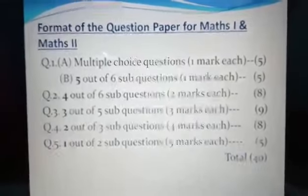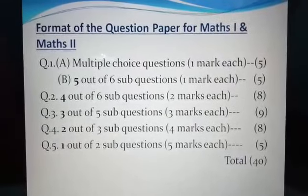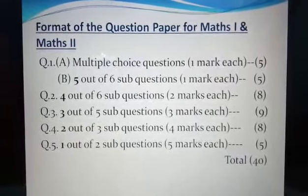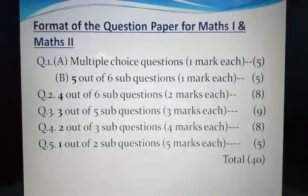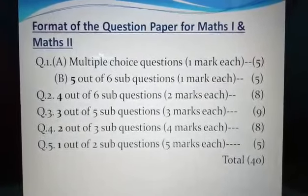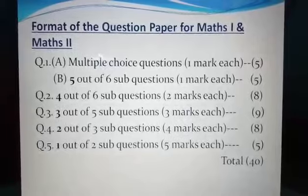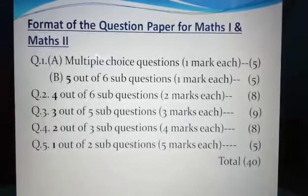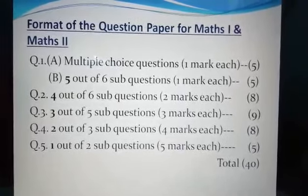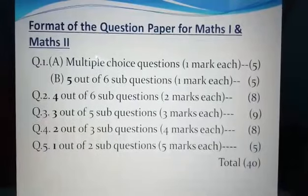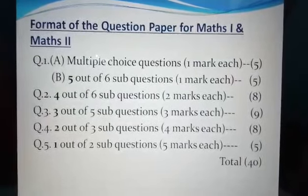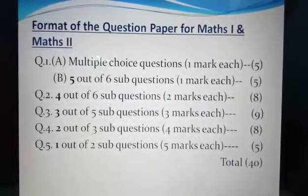The format of the question paper for Maths 1 and Maths 2: Question 1A — Multiple Choice Questions, one mark each, total 5 marks. Question 1B — 5 out of 6 sub-questions, one mark each, total 5 marks. Question 2 — 4 out of 6 sub-questions, two marks each, total 8 marks.